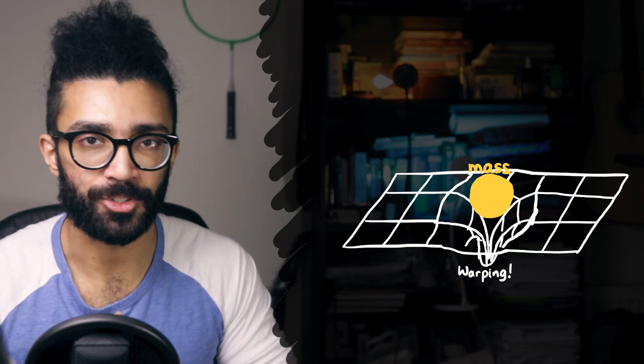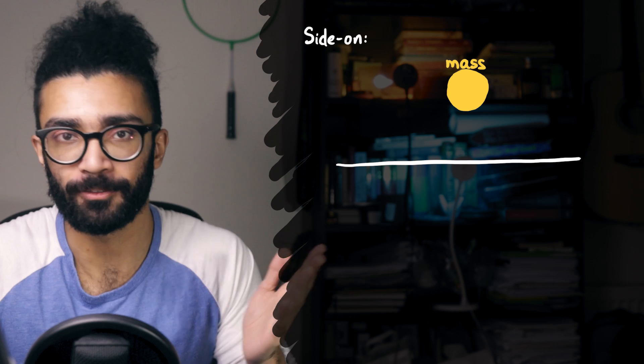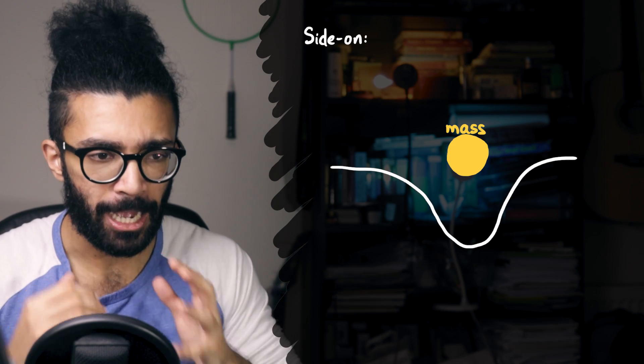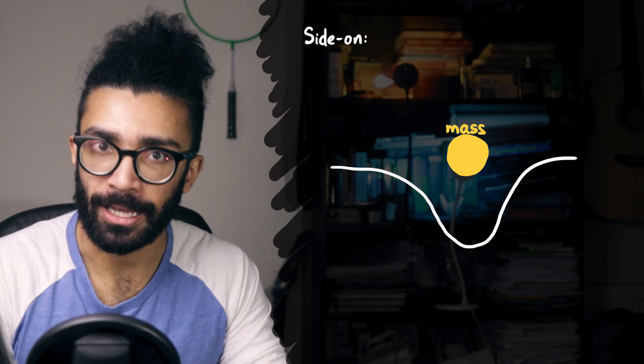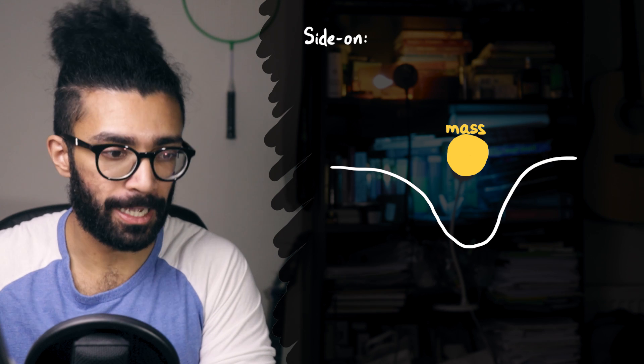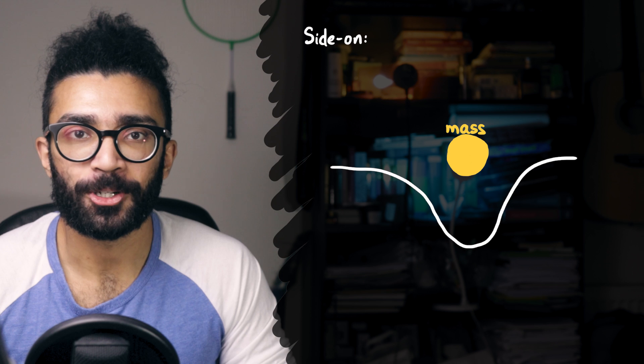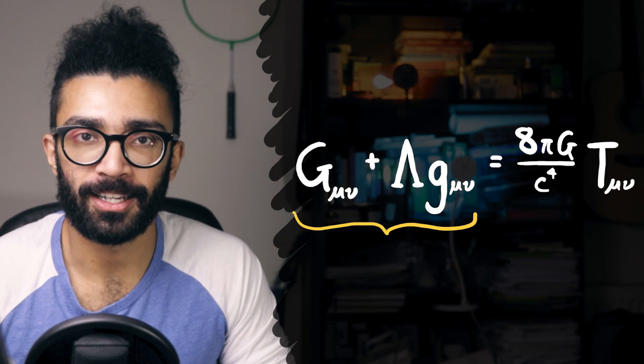You may have seen a common description of general relativity that goes along the lines of a massive object, say the sun, for example, being placed into the fabric of spacetime, and how that massive object bends the fabric of spacetime around it. That's because it has mass, or it has energy, or it has momentum, or it has some sort of pressure going on. That's what directly causes the warping of spacetime. And this, in fact, brings us to the other side of the equation.